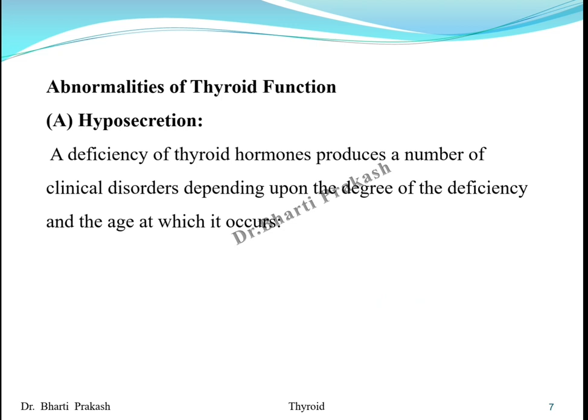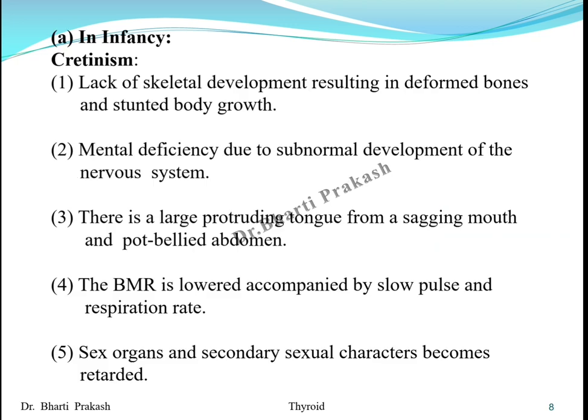Now the abnormalities of thyroid function: the functions may involve hypersecretion — excess secretion — or hyposecretion — less secretion of thyroid hormones. In the case of hyposecretion, when there is a deficiency of thyroid hormones, this produces a number of clinical disorders which depend on the degree of deficiency and the age at which it occurs.